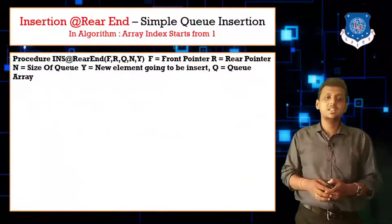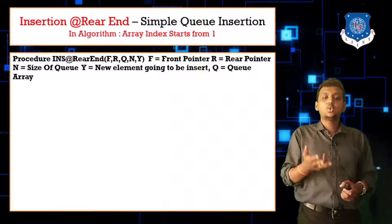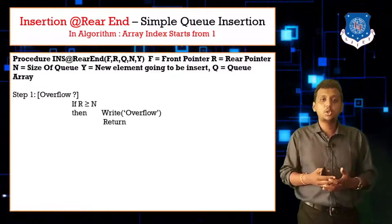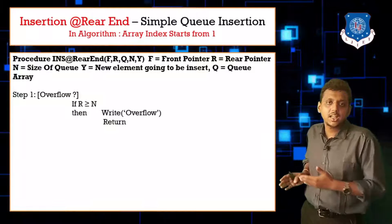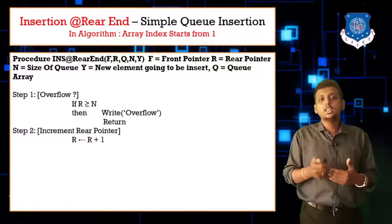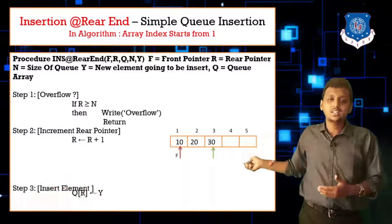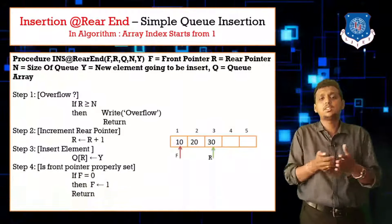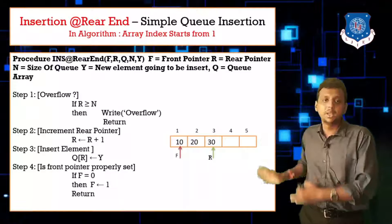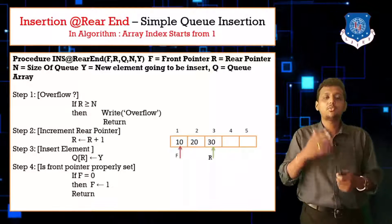The steps are the same as before. If rear pointer is greater than or equal to N, then it is overflow. Increment the rear pointer: R equals R plus 1. Assign Q of R equals Y. If front pointer is at 0, set it to 1. This is the same as simple queue insertion. If you are not aware about the simple queue insertion, check out that video.